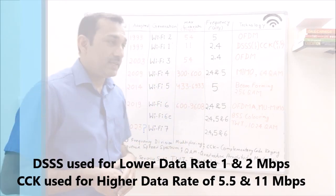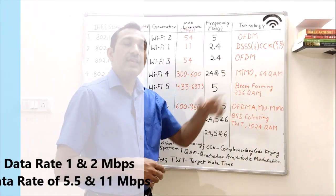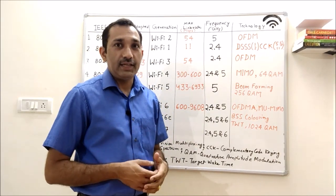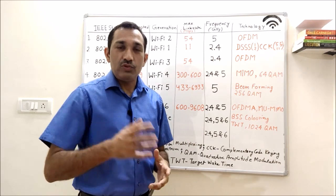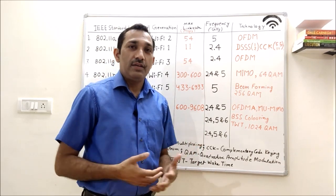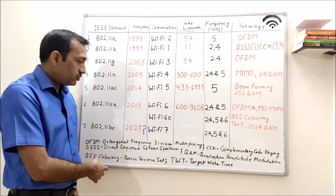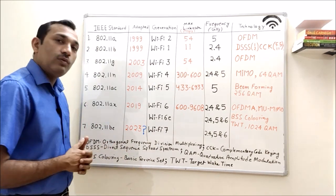11A was working on OFDM technology while 11B used DSSS and CCK. DSSS is direct sequence spread spectrum and CCK is complementary code keying. For the benefit of users or my subscribers, I have kept all the abbreviations here, so you can pause the video and have a look at them.